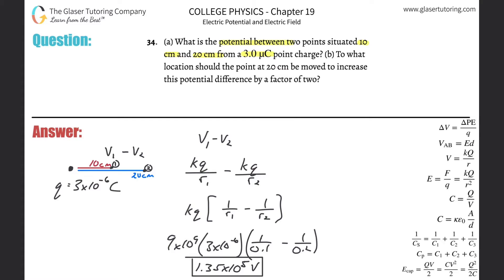Now what's next? To what location should the point at 20 centimeters be moved to increase this potential difference by a factor of two? We gotta think about this a little bit. They're asking us how far should this thing move out in order for the potential difference between these two to increase by a factor of two, meaning we can reverse engineer it. The potential difference here is not 1.35 times 10 to the 5th—it's going to be twice that amount.